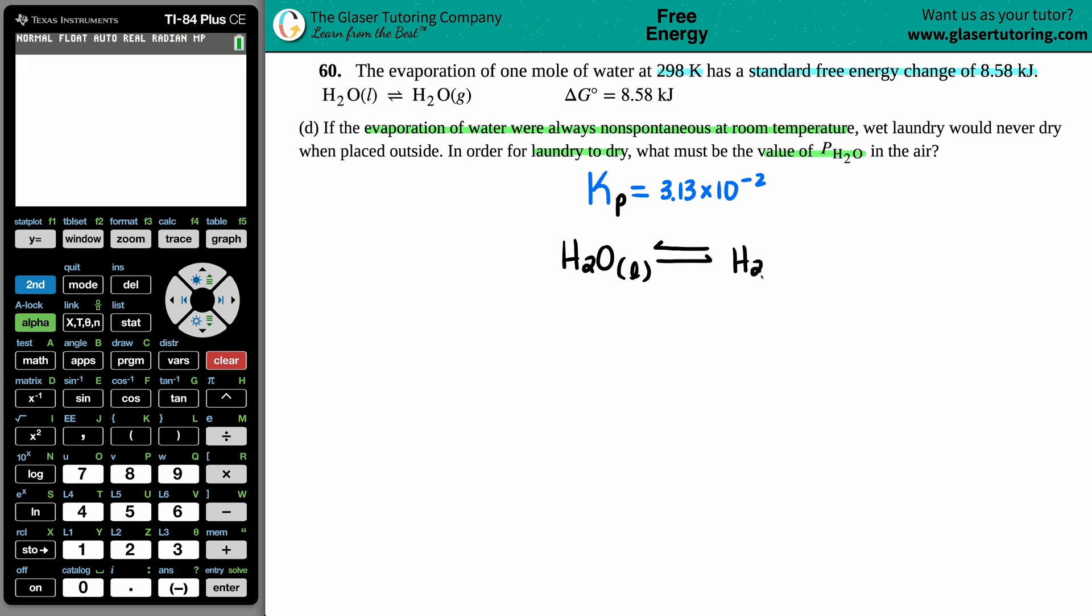Now we know that this is going to be non-spontaneous because they did give us a delta G value. So I'm also just going to write that out next here. The standard delta G that they told us was 8.58 kilojoules, and I know that this is non-spontaneous because it's a positive value.